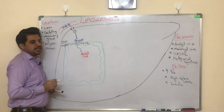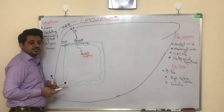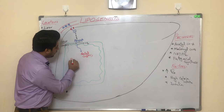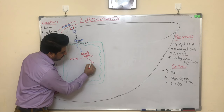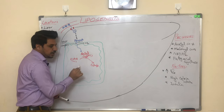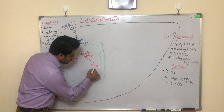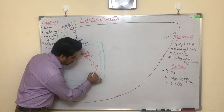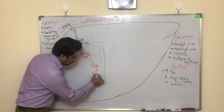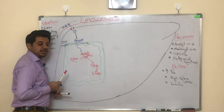After the PDH complex acts, pyruvate is converted into acetyl-CoA, which is a two-carbon compound. Now, inside the mitochondria, the TCA cycle begins. Acetyl-CoA combines with oxaloacetic acid (a four-carbon compound) to form citrate, a six-carbon compound. This citrate is then converted into isocitrate.